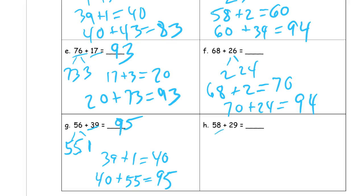58 and 29. We have an 8 and a 9 here. Well, when I have both of them, I'm going to choose to break up the 8 because it's just so much easier to work with 1. 57. So 29 plus 1 is 30, and 30 plus 57 is 87.